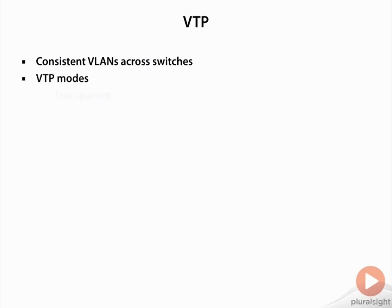We have multiple VTP modes. Transparent mode is kind of like a teenager that lives in your house — they listen to what you say but ignore it, and if they get mail that's not for them, they'll pass it on to others. Transparent mode switches don't pay any attention to the VLAN database that a server switch configures, but they will forward VTP updates out of their trunk interfaces so that others can get the message.